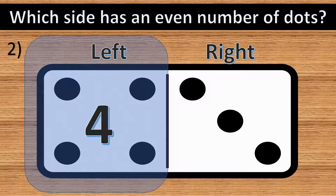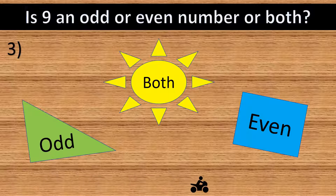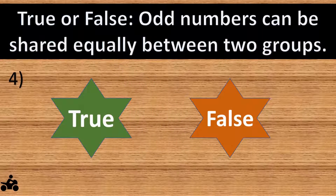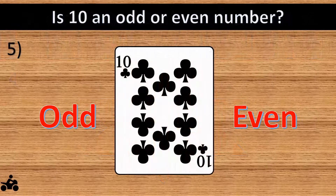The answer is left — it has four dots. Question number three: is nine an odd or even number, or both? The answer is odd. Question number four: true or false, odd numbers can be shared equally between two groups. The answer is false.